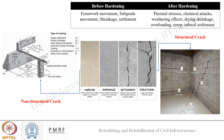Cracking can occur before hardening due to formwork movement, subsidence, shrinkage, or settlement, and after hardening due to thermal stresses, chemical attack, weathering action, drying shrinkage, overloading, creep, and soil settlement. Structural cracks are generally much wider and visible and mostly affect the strength of the structure, while non-structural cracks are much finer and mostly affect the durability performance.